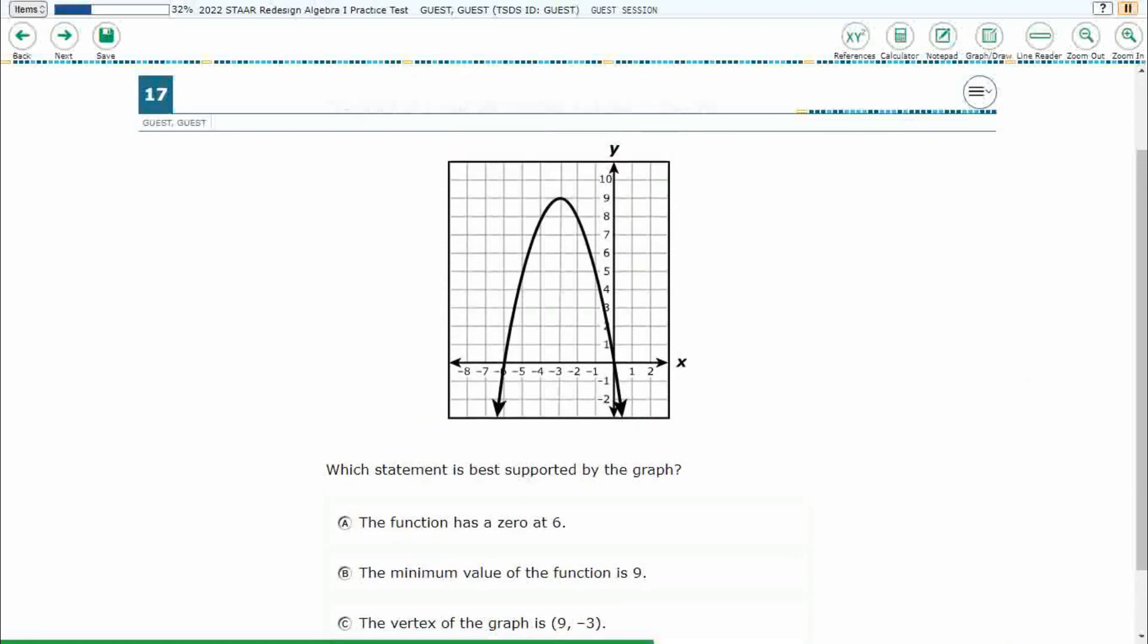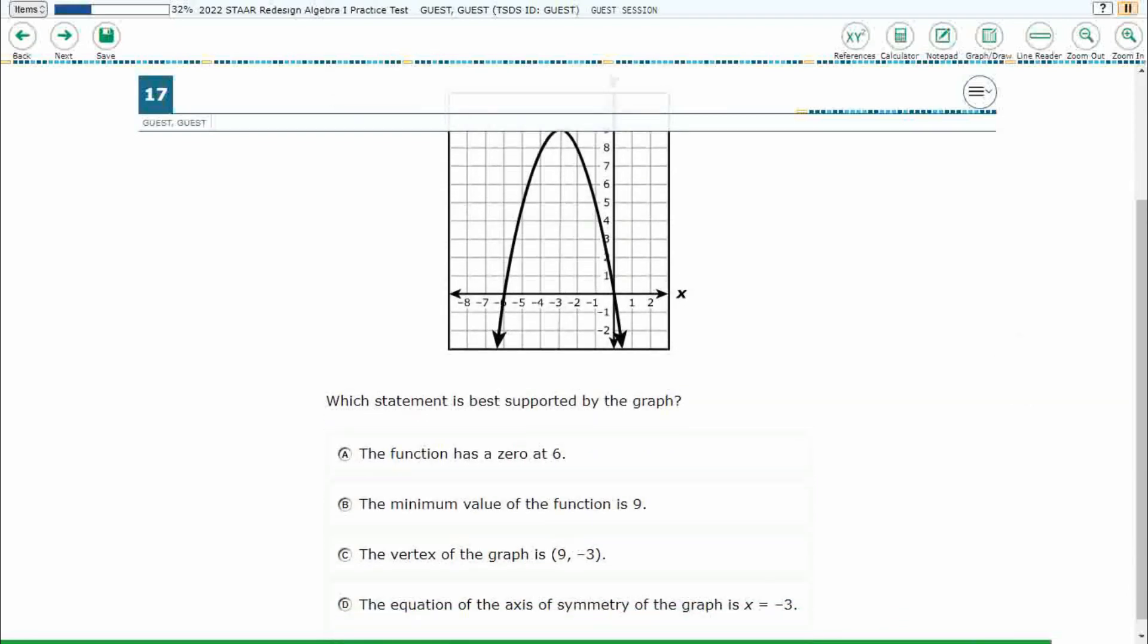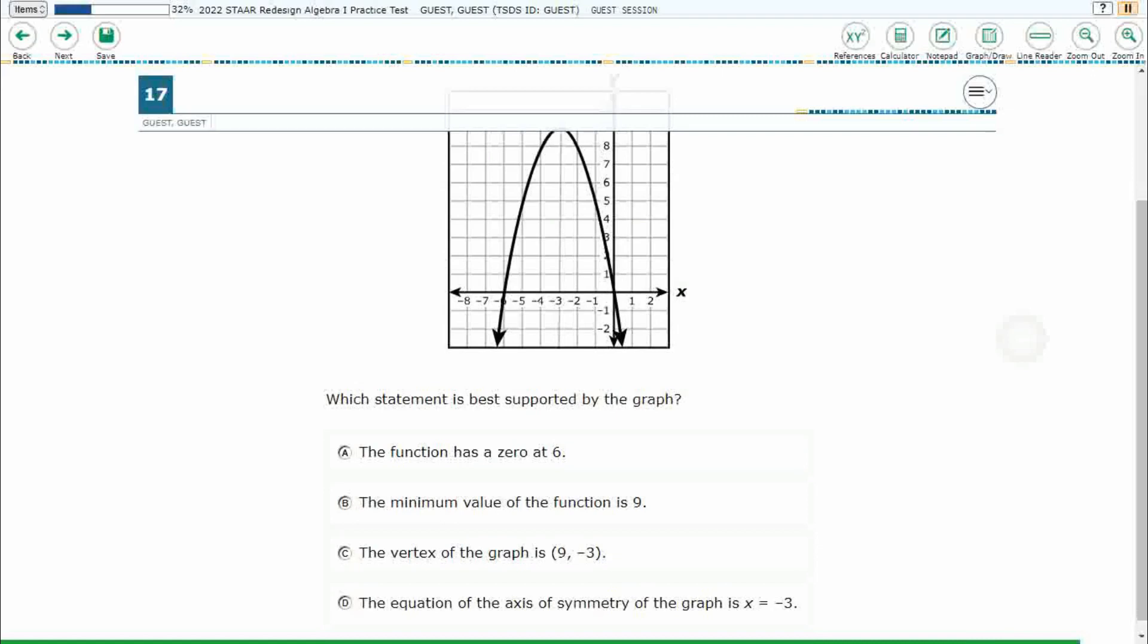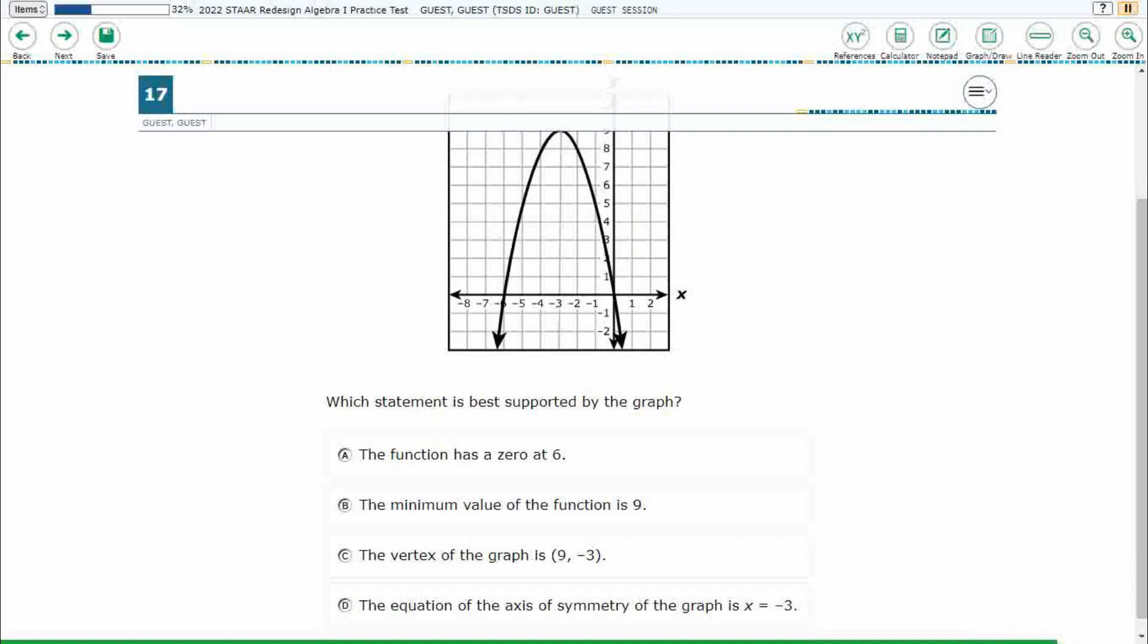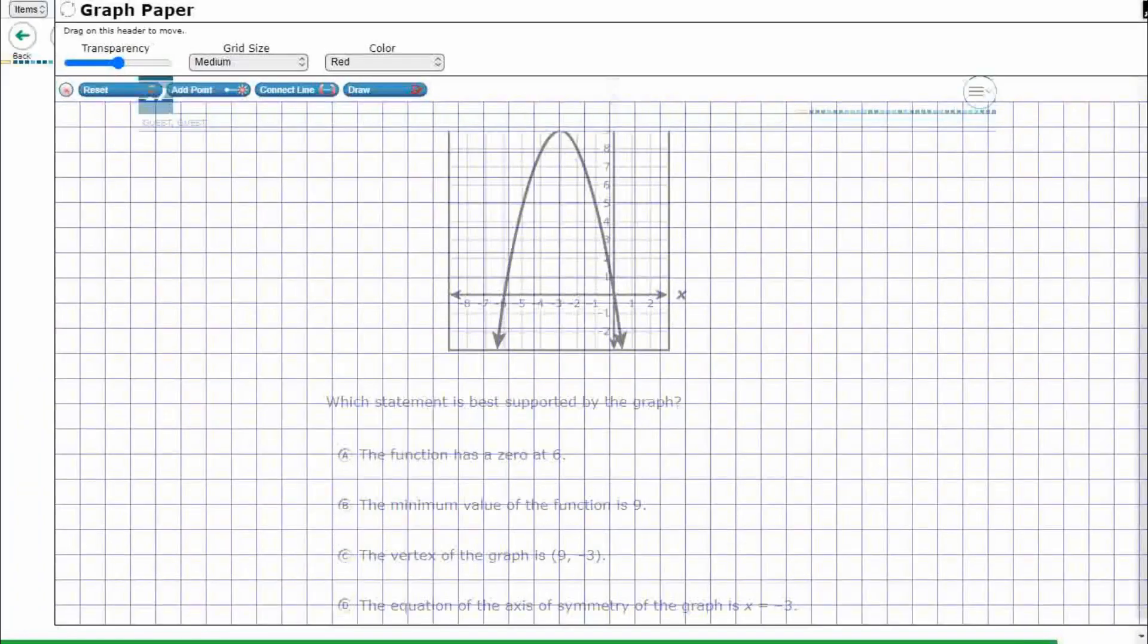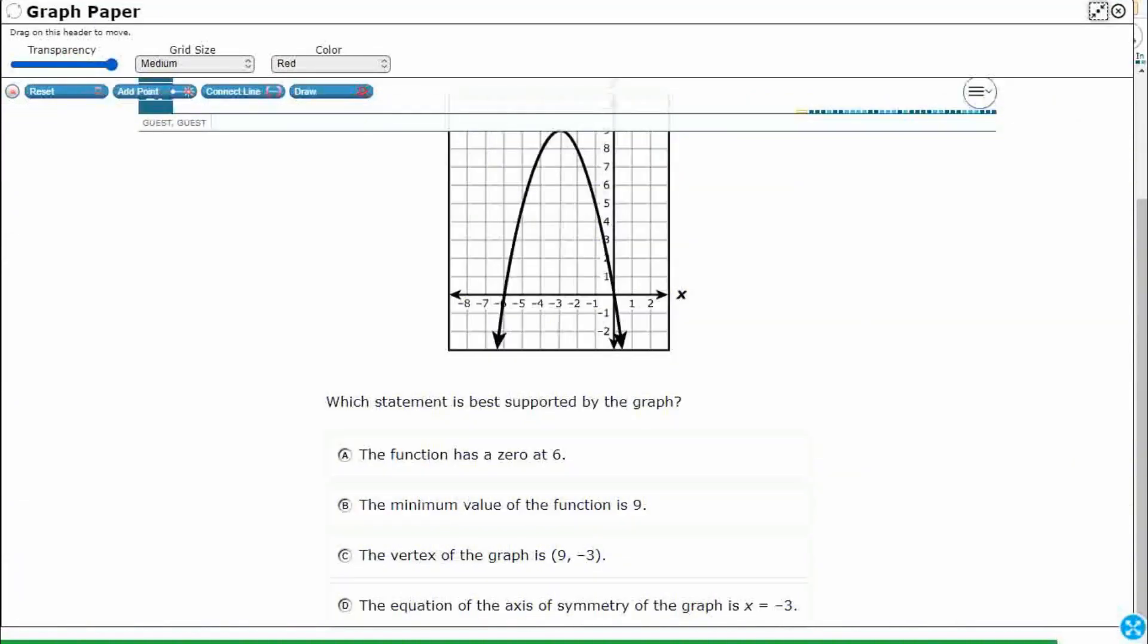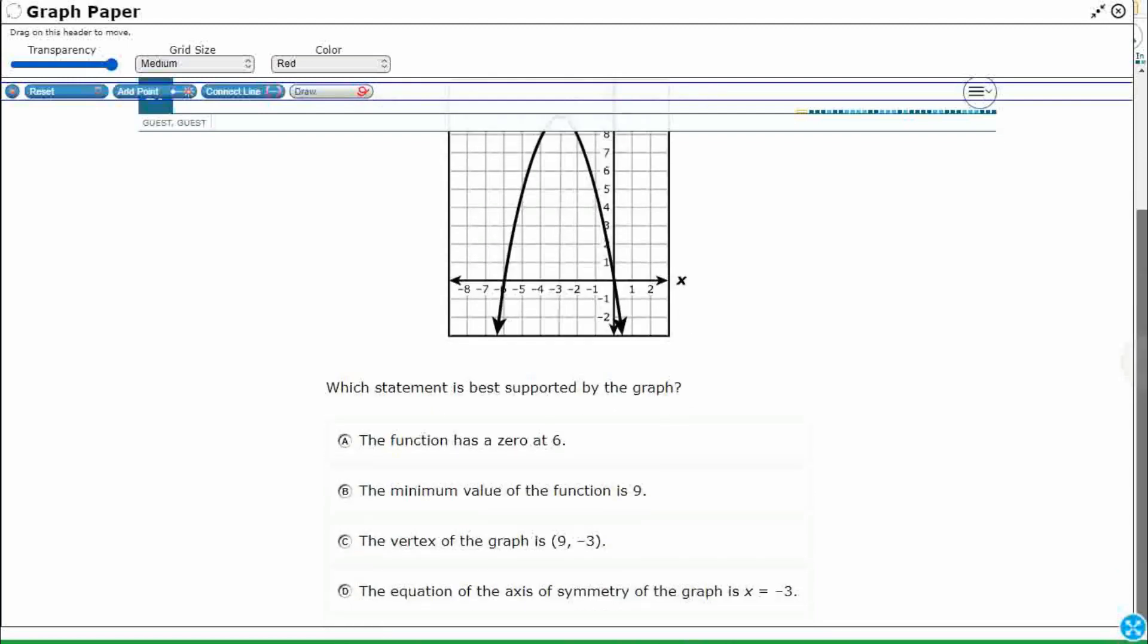So, we've got a graph of a quadratic function here shown on this grid, and we're looking for a statement, one statement that is best supported by this graph. So let's open up our Graph Draw feature. We're going to find three incorrect statements, and one is going to be correct. Alright, so what do we know about this graph? We're going to have to draw on this, but we're going to have to scroll up and down just a little bit.